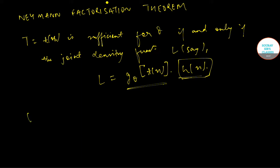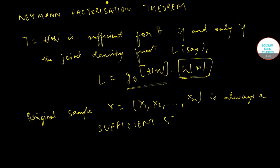And it should be noted that the original sample x is equal to x1, x2, and so on up to xn is always a sufficient statistic.